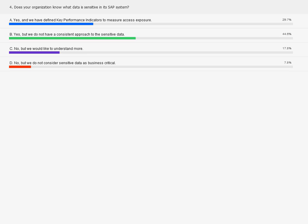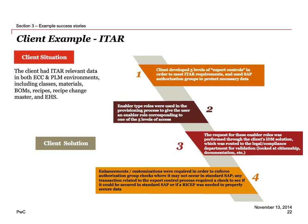Now we're coming upon our last client example — ITAR. The client had ITAR data in ECC and PLM environments, including classes, materials, bills of materials, recipes, recipe change master, and environmental health and safety implications. SAP was already implemented. The client had thought about ITAR upfront, but a more comprehensive framework was needed. They leveraged an IDM tool to limit restricted access during provisioning. Let's walk through the step-by-step solution: they first developed five levels of export controls — from the most critical information at level one down to level five, where most people can have access. This is where they took the time to define their policy from an ITAR perspective.